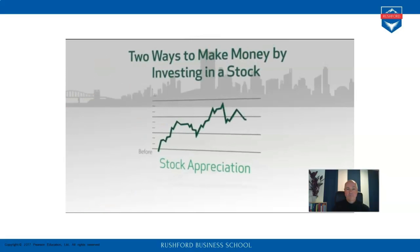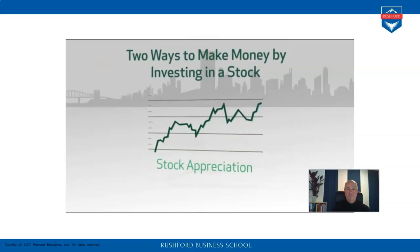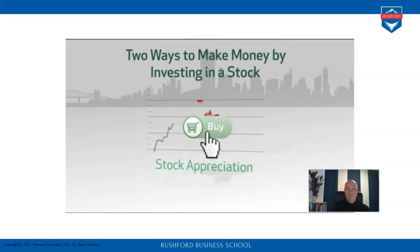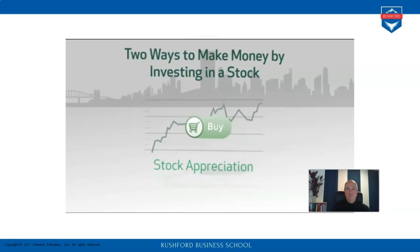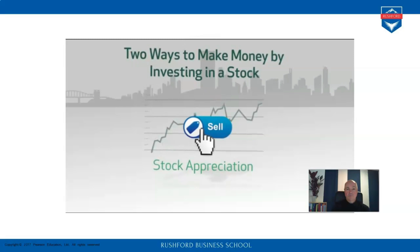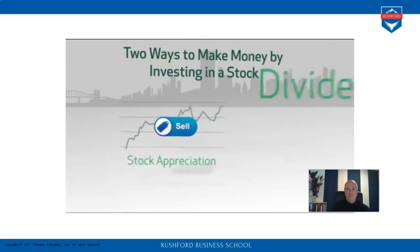The first is through stock appreciation — when a stock you own goes up in value. If an investor bought the stock at one price and the price went up, the investor could then make money by selling the stock to another investor at the higher price. The second way is through a dividend.